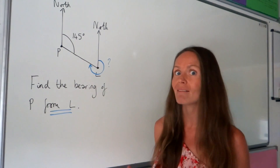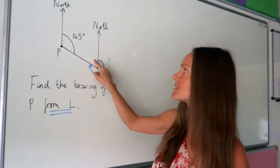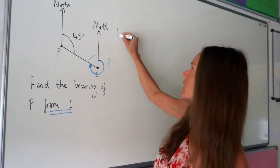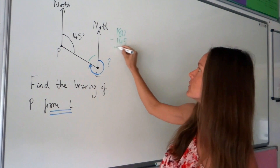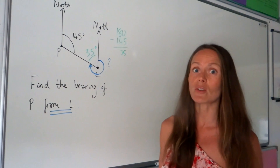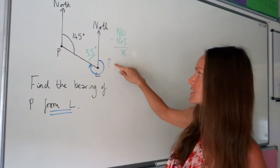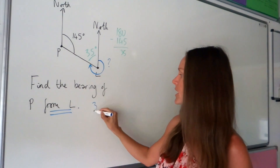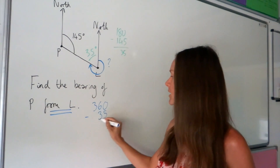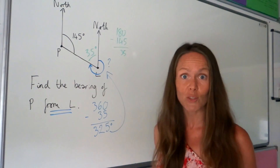You need to know the rules of parallel lines and angles. These two co-interior angles always add up to 180, so to find this angle I do 180 minus 145, which gives me 35 degrees. We also know there are 360 degrees in a full circle, so to work out the bearing I do 360 minus 35, which gives me 325 degrees. That is the answer to the first question.